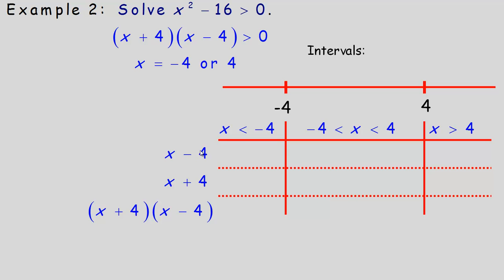We're not worried about the exact values, just the sign — positive or negative — to determine where x squared minus 16 is greater than 0. For numbers below negative 4, like negative 7: negative 7 minus 4 is negative, and negative 7 plus 4 is still negative. A negative times a negative is positive, so the function is positive below negative 4.